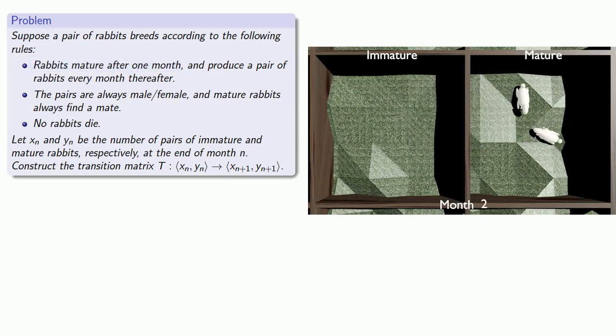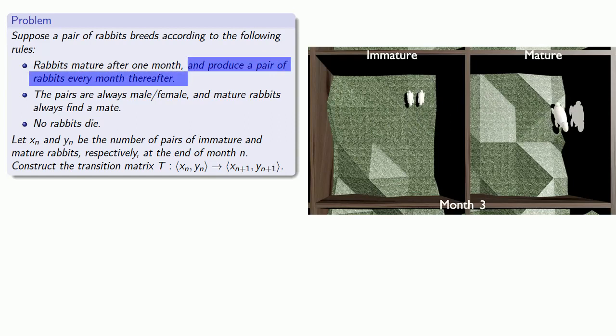Now I wait another month. And since I now have a pair of mature rabbits, they will produce a pair of immature rabbits. And so at the end of month 3, I have one pair of mature rabbits and one pair of immature rabbits.